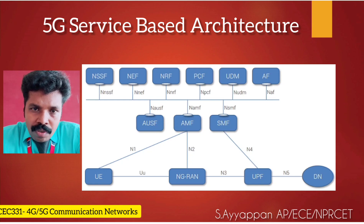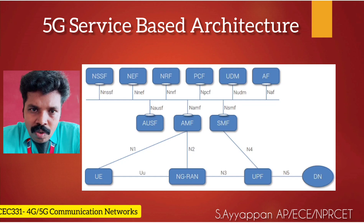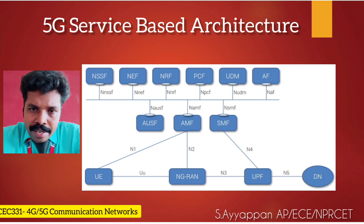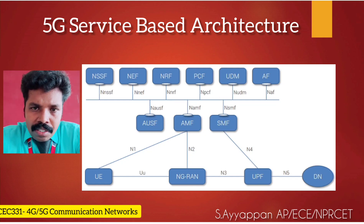All these network functions communicate with each other by using network services over RESTful API communication using protocols like HTTP/2. When any network function wants to communicate with another, they typically use HTTP methods with some kind of API keys. API means Application Programming Interface.